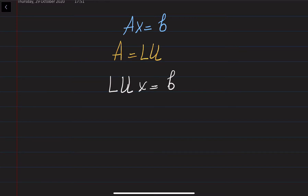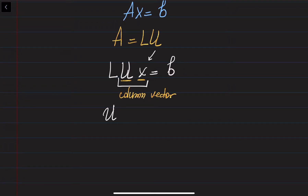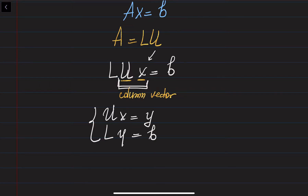Please note that we don't know the vector x, but we know all other things. When you multiply the matrix U to the column vector x, the result is again a column vector. We don't know that column vector, so let's call it y — meaning Ux = y. Substituting that in, it becomes Ly = B.